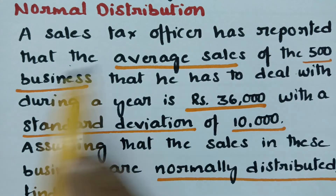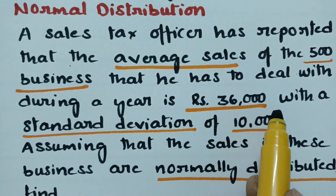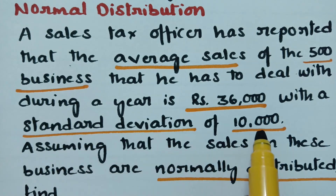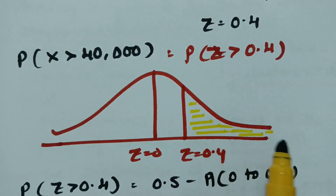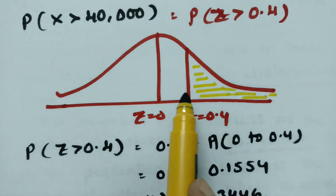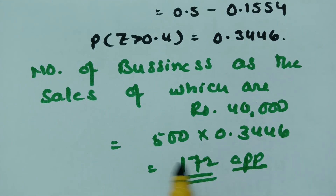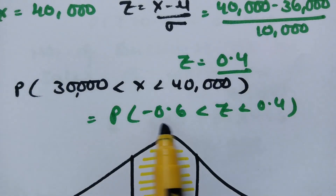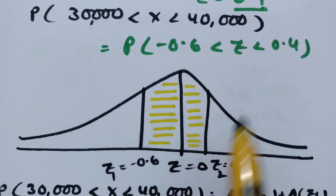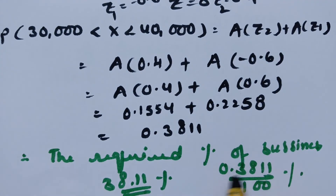To recap: the average sales of 500 businessmen is 36,000 with a standard deviation of 10,000, using normal distribution. For sales above 40,000, we calculated P(z > 0.4) = 0.3446, giving approximately 172 businesses. For sales between 30,000 and 40,000, with z values of -0.6 and 0.4, adding areas A1 and A2 gives a required percentage of 38.11%. Thank you so much for watching.